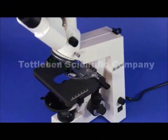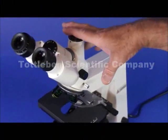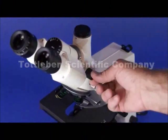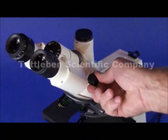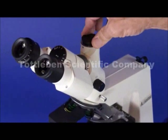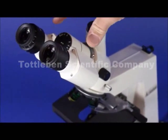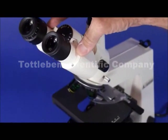This is a Zeiss Axios Star Microscope. It's equipped with a trinocular head for photography, a light path selector to direct the light both to the photo tube for photography and also to the eyepieces for visual observation.